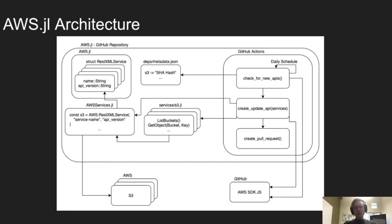Regenerating the definitions consists of two changes. The first is to services/s3.jl — this is what aws.sdk.jl kind of looks like, where every request has its own function, with documentation on what the request does as well as any optional and required parameters, so you don't have to go to Amazon's documentation. The second change is to awsservices.jl, a file with a constant for every service we define, where the constant is a struct based off of the service request type that Amazon expects, and we use these constants to make requests to Amazon.